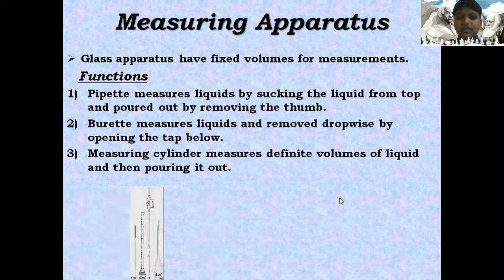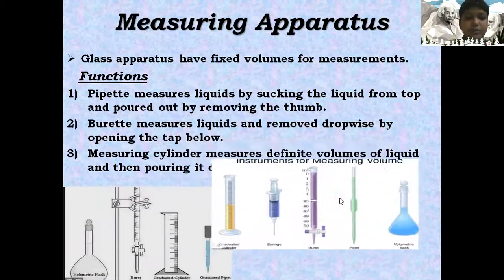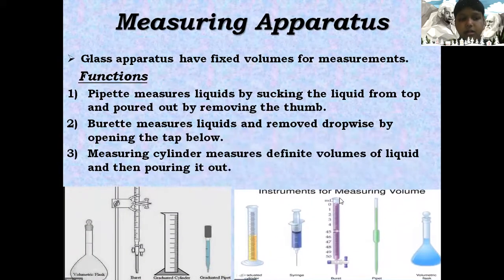Functions: Pipette measures liquid by sucking the liquid from top and pours out by removing the thumb. Burette measures liquids and removes dropwise by opening the tap below. Measuring cylinder measures definite volumes of liquid and then pours it out.